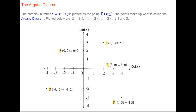To plot 2 plus 3i, we go across 2 and up to 3 to point P. To plot minus 4 minus 2i, we go across to minus 4 and down to minus 2, giving point Q. To plot 4 minus 3i, we go across to 4 and down to minus 3 to point T. The number 2i is really 0 plus 2i, so we go to the point (0, 2) on the imaginary axis, point S. The real number 3 is really 3 plus 0i, so we go to point R at (3, 0) on the real axis.